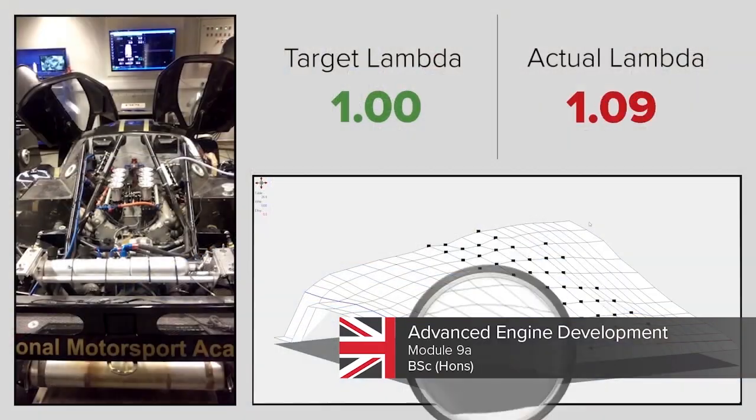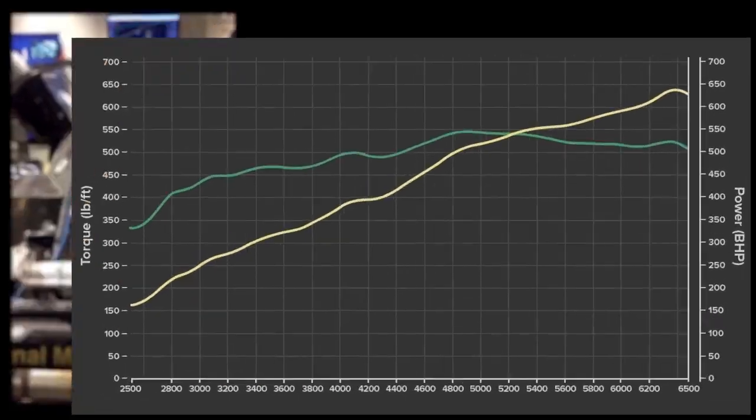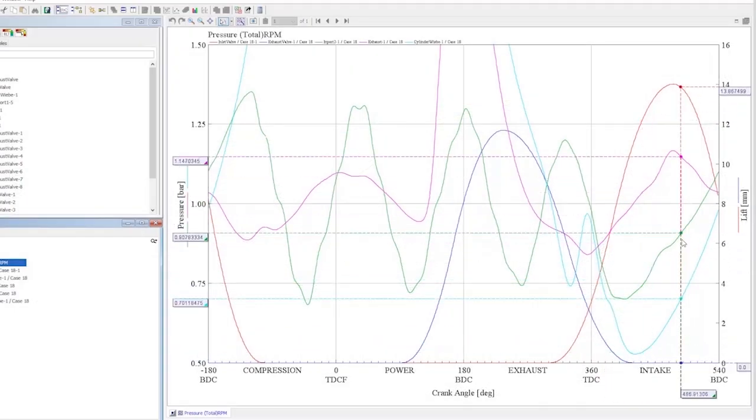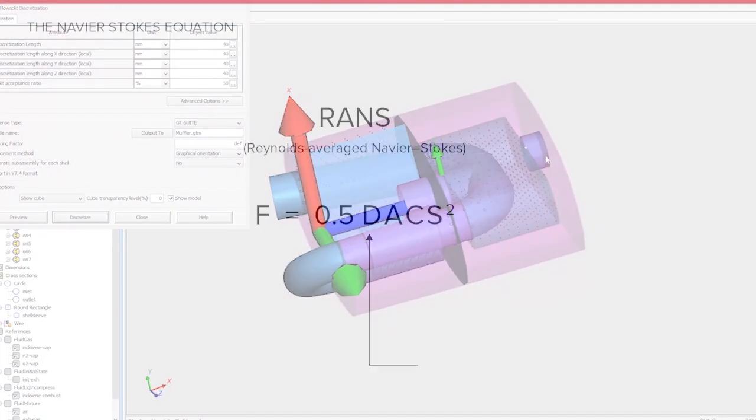Firstly, for module 9, if you choose the engine module, you'll analyze data taken from tests carried out on flow benches and dynamometers. You'll then use this data to fully validate your complex engine simulation models.